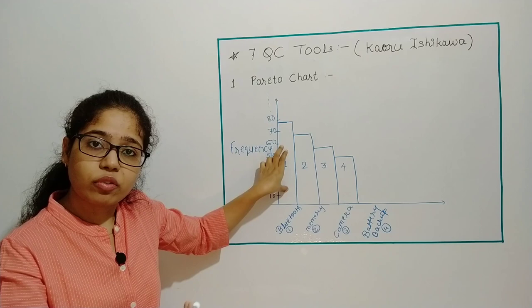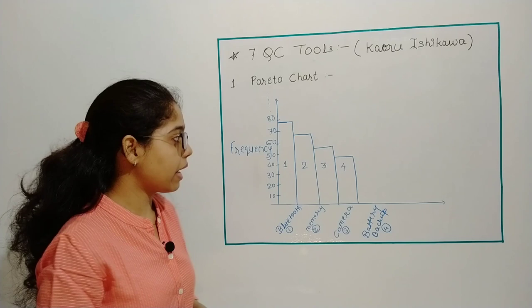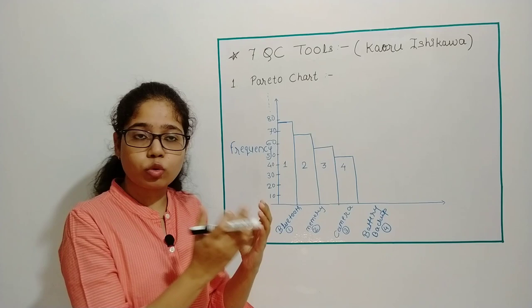After improving, I will again relaunch the product. Then I will see my feedback and check if any customer complaint is coming out or not. Basically, Pareto Chart is to work on defects.